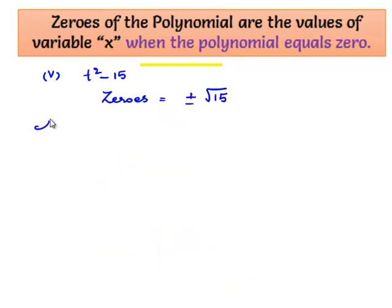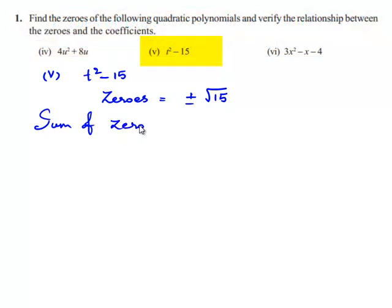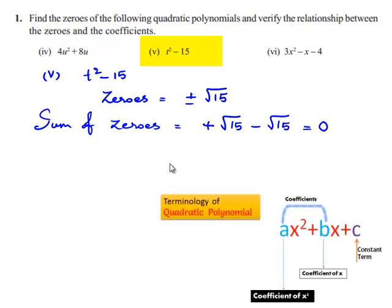Now the sum of zeros is equal to +√15 + (-√15), which is 0. We can say that 0 = -0/1, which is the negative of the coefficient of t divided by the coefficient of t².